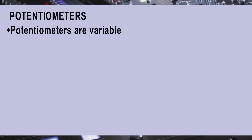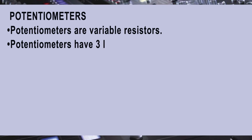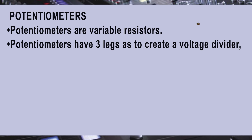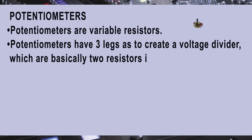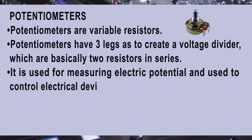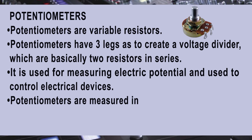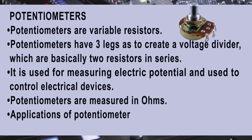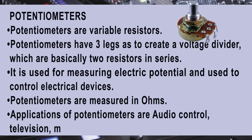Potentiometers are variable resistors. They have three legs to create a voltage divider, which is basically two resistors in series. Potentiometers are used for measuring electric potential and to control electrical devices. They are measured in Ohms. Applications of potentiometers include audio control, television, motion control, etc.